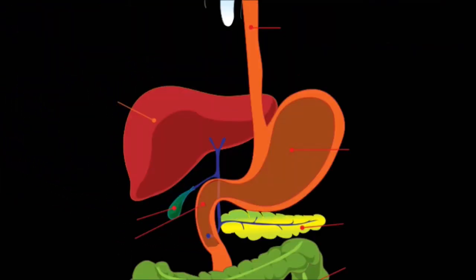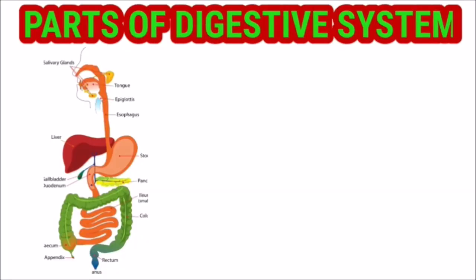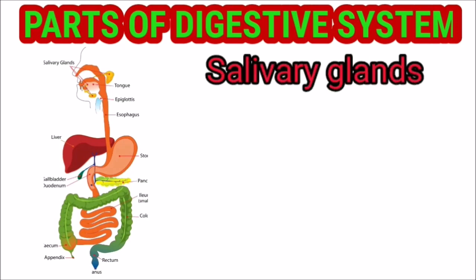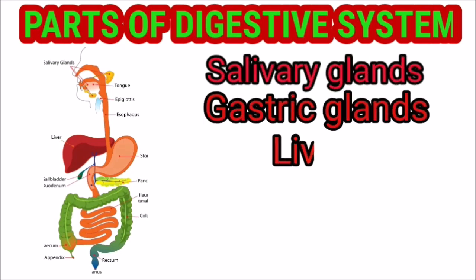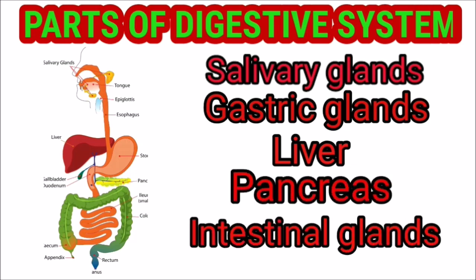There are two major glands prominently seen in this picture: the liver and pancreas. They secrete digestive juices which help in the process of digestion. This is how the human digestive system is structured, with different modulations of the alimentary canal as well as the digestive glands such as salivary glands, gastric glands, liver, pancreas, and intestinal glands. With this structural organization, the digestive system takes part in the process of digestion and assimilation of food into our body.